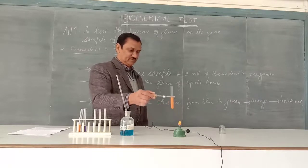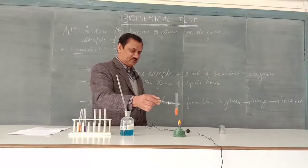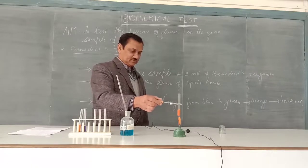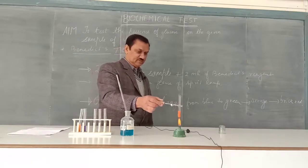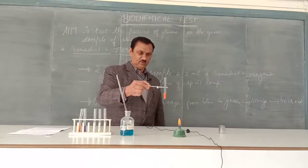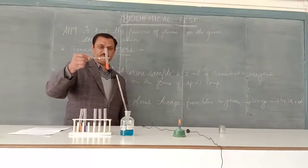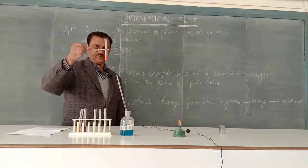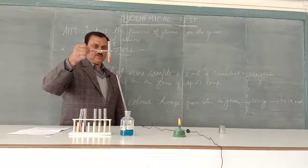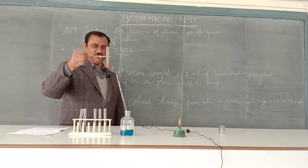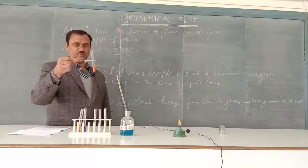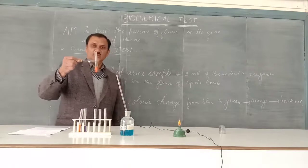The appearance of brick red precipitate in the test tube shows that the given urine sample contains glucose. This is a confirmed test. The red precipitate that appears in the test tube confirms the presence of glucose in urine.